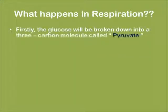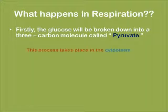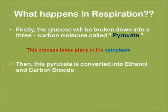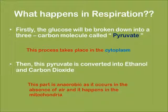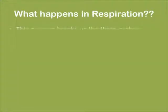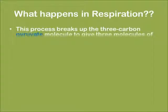Firstly, the glucose will be broken down into a three-carbon molecule called pyruvate. This process takes place in the cytoplasm of the cell. Then this pyruvate is converted into ethanol and carbon dioxide. This part is anaerobic as it occurs in the absence of air and happens in the mitochondria of the cell. This process breaks up the three-carbon pyruvate molecule to give three molecules of carbon dioxide.